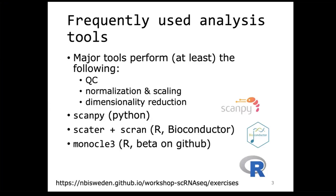I have to be honest — I doubt how much people are still investing in developing Monocle 3 further. Still, it is a package used very frequently, and it is particularly strong for trajectory analysis, though you can also do typical quality control and dimensionality reduction with it. The last one I wanted to mention — and these are the four most used tools as far as I know — is Seurat. Seurat is on CRAN but not on Bioconductor, and it's also an R package. I think it is still the most used tool today for single cell transcriptomics analysis, and we will also use Seurat in the R exercises.